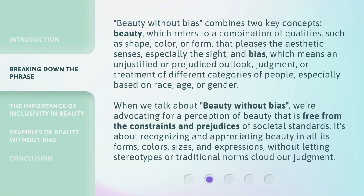Beauty Without Bias combines two key concepts. Beauty, which refers to a combination of qualities — such as shape, color, or form — that pleases the aesthetic senses, especially sight. And bias, which means an unjustified or prejudiced outlook, judgment, or treatment of different categories of people, especially based on race, age, or gender. When we talk about Beauty Without Bias, we're advocating for a perception of beauty that is free from the constraints and prejudices of societal standards. It's about recognizing and appreciating beauty in all its forms, colors, sizes, and expressions, without letting stereotypes or traditional norms cloud our judgment.